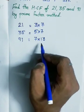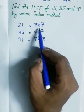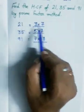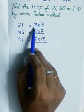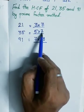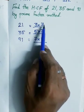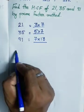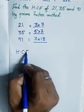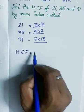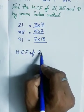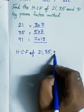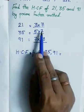Now I have to find the number which is present in all the given numbers — the number which is present in all the prime factors. You can see 7 is present here, 7 is present here, and 7 is present here. So 7 is the only number present in all three prime factors. Therefore, the highest common factor of 21, 35 and 91 is 7.